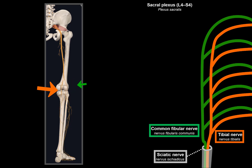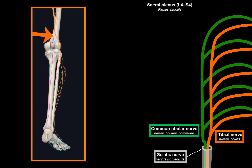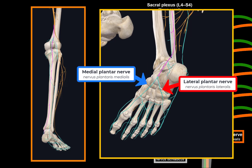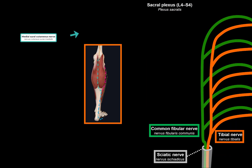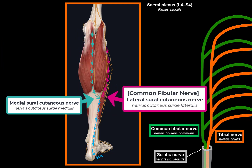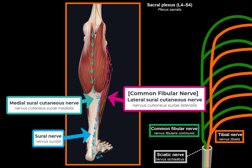The tibial nerve travels with the posterior tibial artery and veins, descends between the posterior muscles of the calf, reaches the sole via the malleolar canal, and then divides into the medial and lateral plantar nerves. The first branch to mention is the medial sural cutaneous nerve, which runs with the small saphenous vein and lies very superficially under the skin.